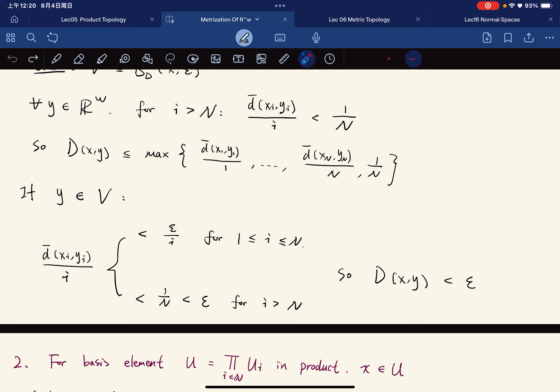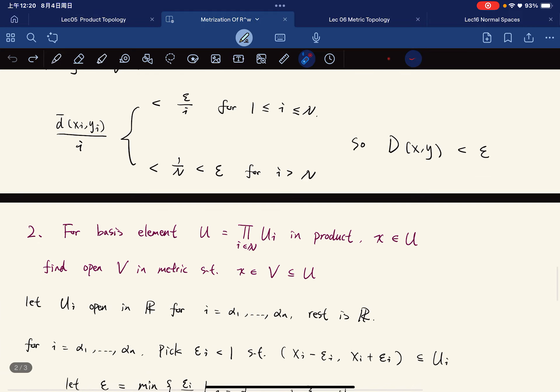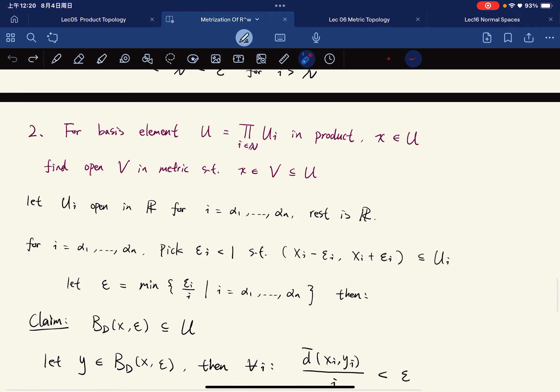So we have the thing. Y is in V, then we have this, which gives this. So we're done with this direction, and let's do the other direction.